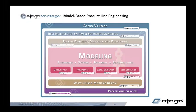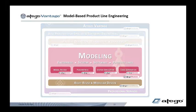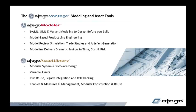At the core of Otago Vantage is modeling and asset reuse and modular design. Modeling is provided with Otago Modeler, previously Artisan Studio. Asset reuse and modular design is enabled with Otago Asset Library. These are the two products we'll be looking at in detail in this video.